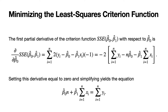The first partial derivative of the criterion function SSE — which is a function of beta zero hat and beta one hat — with respect to beta zero hat is given by the expressions shown here. The first expression is what you get when you first take the derivative, and after simplification you get the expression on the far right-hand side. Setting that expression equal to zero and simplifying gives the equation: beta zero hat times n plus beta one hat times the sum of the x's equals the sum of the y values.